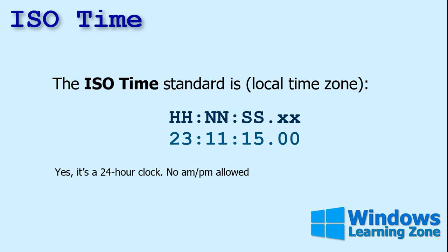The ISO standard also includes times. If you want to change your time format, it's hour, minute, seconds, and then fractions of a second if you want. I used N to represent minutes because in Microsoft Access, N is for minute in the format and M is for month. This is a 24-hour clock — there's no AM and PM in the ISO standard. If you're familiar with military time, 2300 hours is 11 o'clock PM. That's probably the one reason why I won't yet switch to 24-hour time, because so many people are still used to a 12-hour clock.